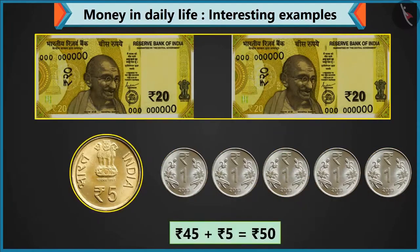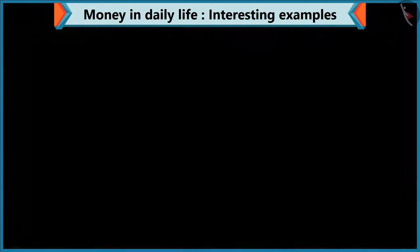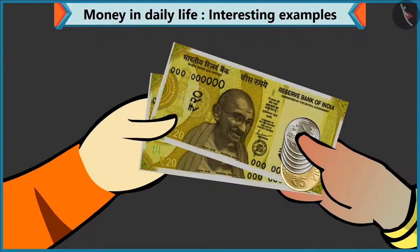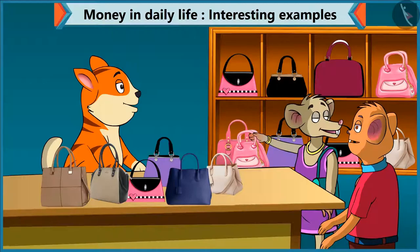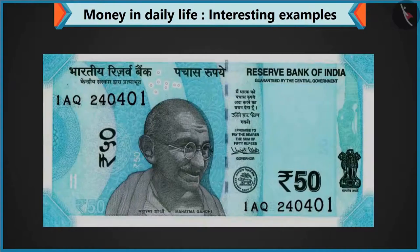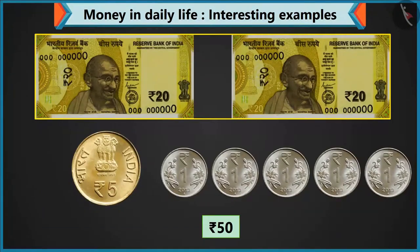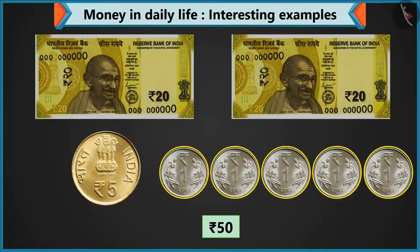Chichi, look — adding 5 rupees to 45 makes 50 rupees. Please take this 50 rupees for the purse. Thank you. Chichi, let's go home now. Yes, let's go. So kids, you saw that you can pay 50 rupees by adding a note of 50, or 2 notes of 20, a coin of 5, and 5 coins of 1 rupee.